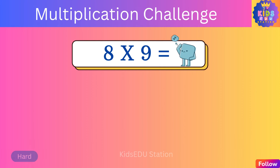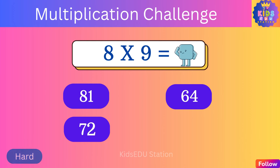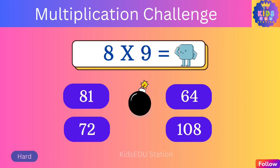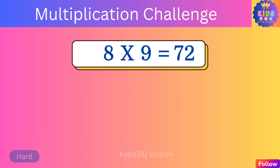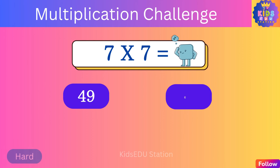What is eight times nine? Eighty-one, sixty-four, seventy-two, one hundred eight. Eight times nine is seventy-two. What is seven times seven? Forty-nine, sixty-four.